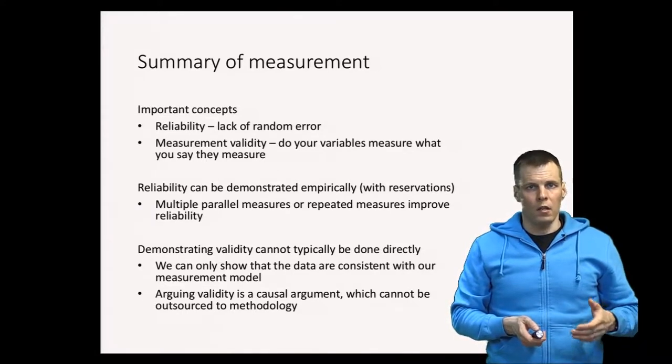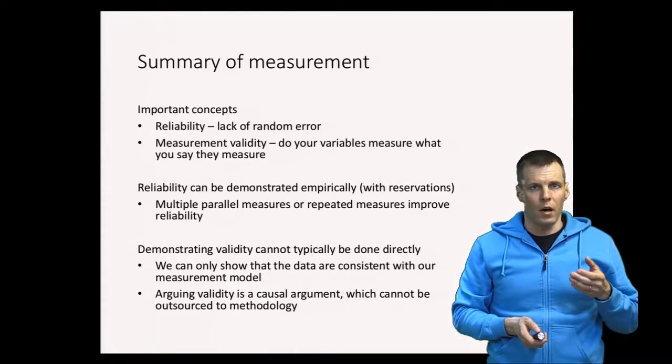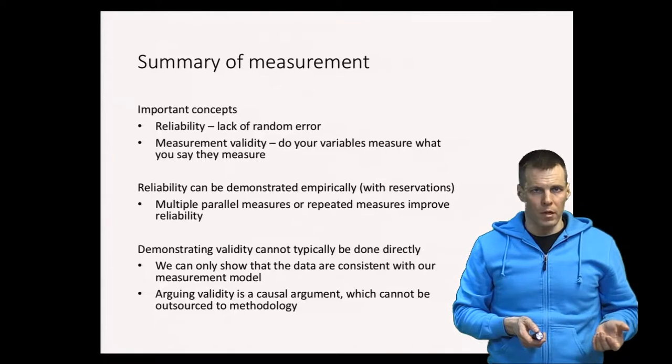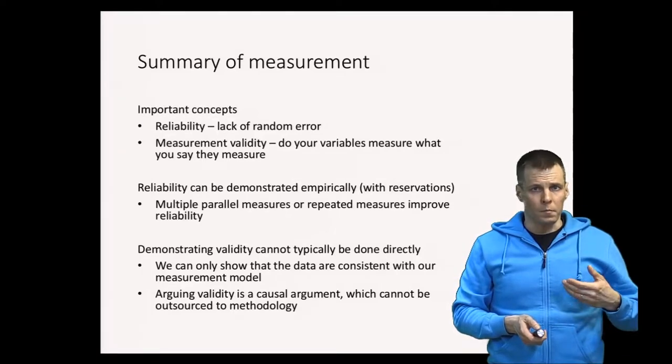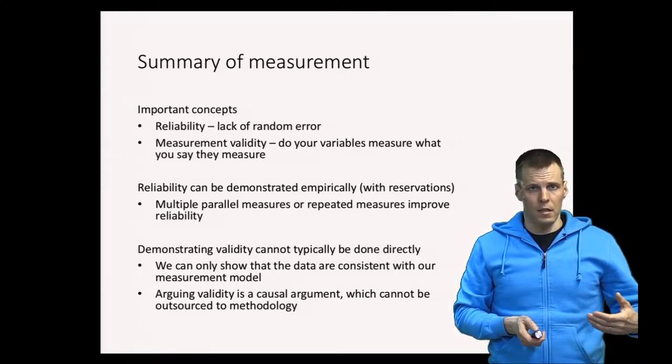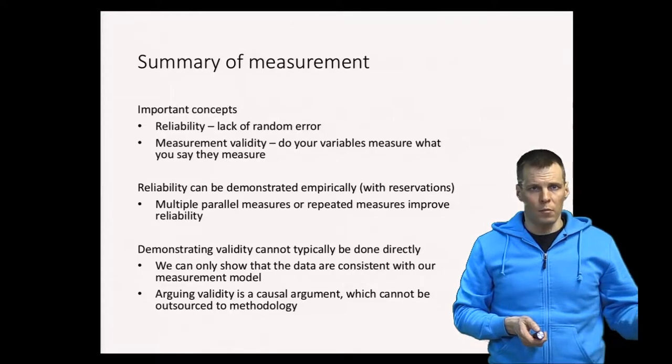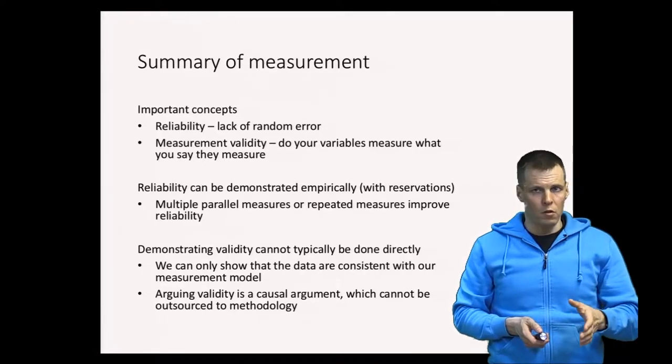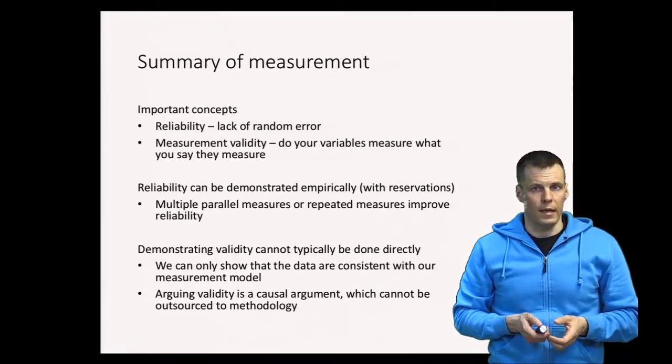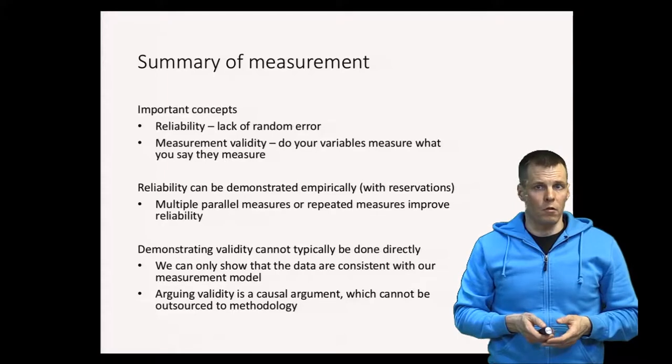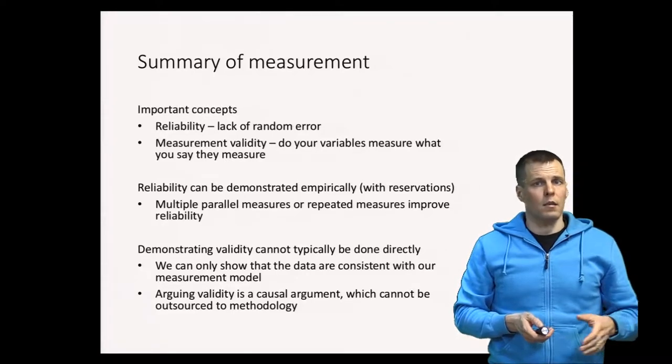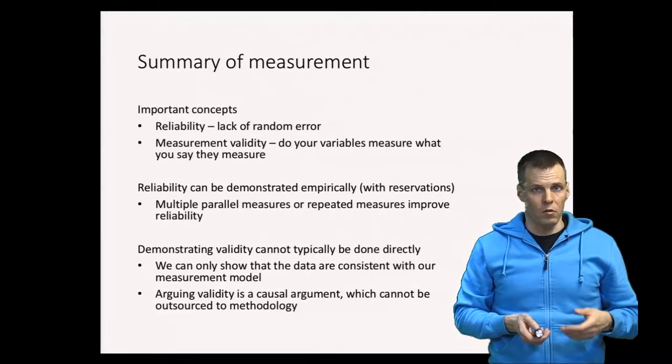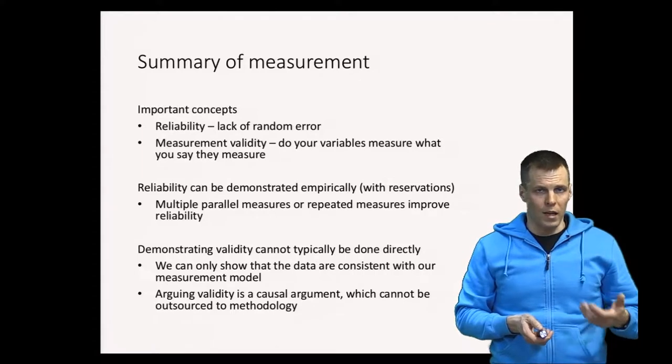Validity on the other hand is much more complicated. It is about whether the indicators measure what they are supposed to be measuring. One way to think about that is that the measured attribute must exist and it must causally produce variation in the observed score. That is of course more difficult to demonstrate. Reliability can be demonstrated empirically because it's basically a statistical concept, lack of random noise.